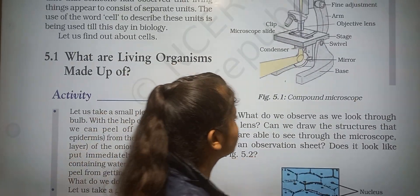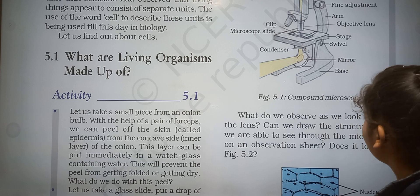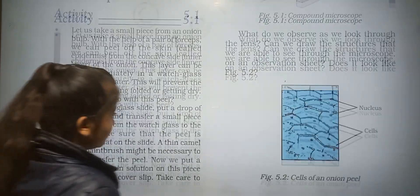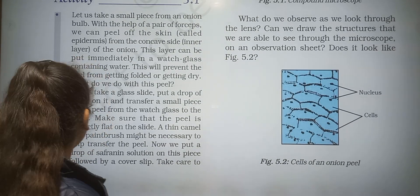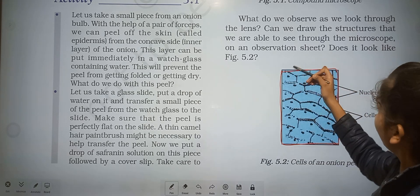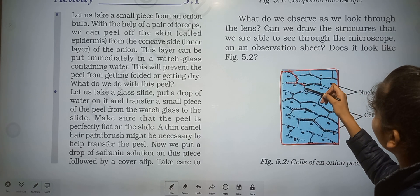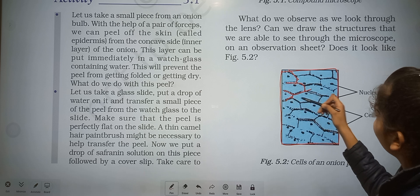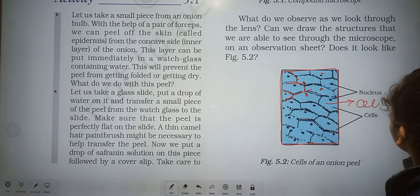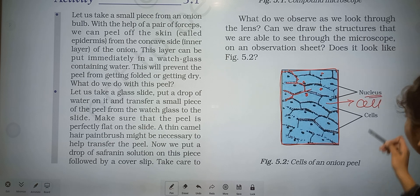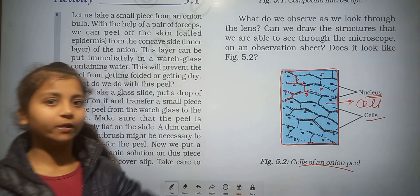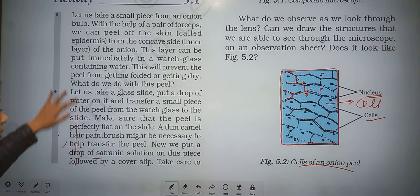As we look through the lenses, we can draw the structure that we are able to see. The structure visible under the microscope shows the peel with small room-like compartments, and inside is the nucleus. This is called a cell — the cell of an onion peel.